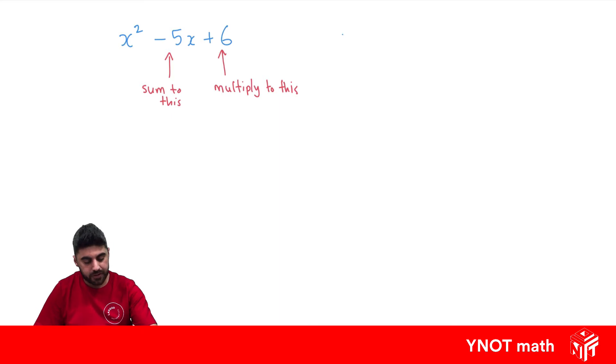Another way to look at it is that the two factors have to be a sum of our x coefficient and a product of the constant term.